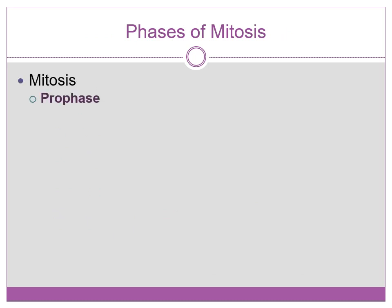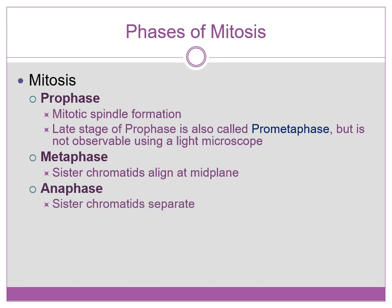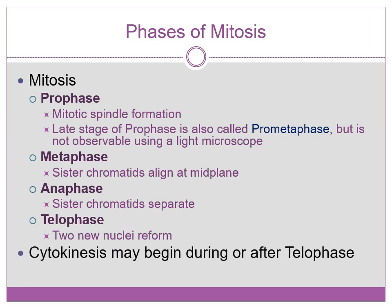Phases of mitosis include prophase, which includes the mitotic spindle formation. The late part of prophase can also be called prometaphase, but cannot be observed in the light microscope easily. The next stage is metaphase, when the duplicated chromosomes consisting of sister chromatids line up in the middle of the cell. Then anaphase, when the sister chromatids separate. Telophase, when two new nuclei reform. Then cytokinesis, which is the division of the rest of the cytoplasm and cell membrane, occurs during telophase or after.